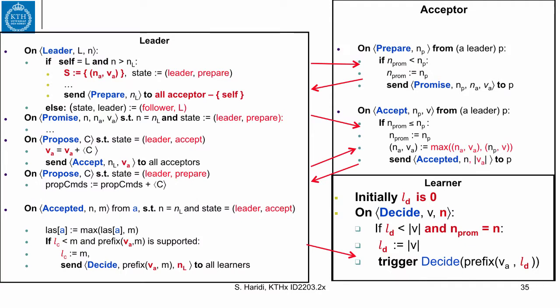Such that the decided sequence itself is the prefix of the accepted sequence at LD. Then the algorithm works as follows. When we send a decide with the prefix of the accepted sequence at M, which is what we call the supported or chosen sequence, to all learners. When this sequence arrives here, we look to the LD, which is an index on the accepted sequence of what is decided so far. This is initially zero. Now, if LD is smaller than the length of the decided sequence, and we are running in the same round by the same leader, then we update the length of the decided sequence. And then we trigger to the higher level the decide command, where we say that we have decided VA up to the length of the decided sequence here, so this is a prefix of VA at LD.